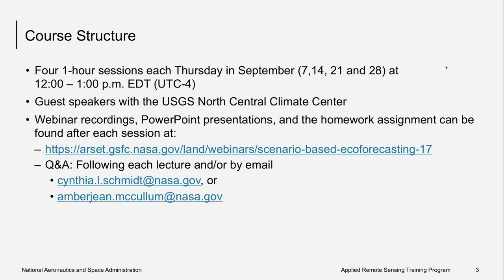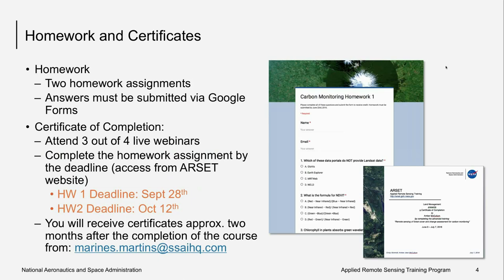If you have any additional questions after our session today, you can email myself or my colleague Cindy Schmidt — our email addresses are listed below. We will have two homework assignments submitted via Google Forms. The first homework link is available on the RSET website and in the chat. The second will be available next week. The first homework is due September 28th, and the second is due October 12th. To receive a certificate of completion, you must attend three out of four live webinars and complete both homework assignments, and you can expect to receive the certificate about two months after the end of the course.